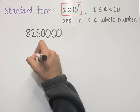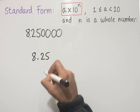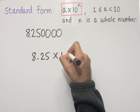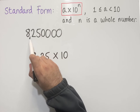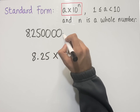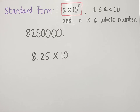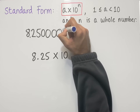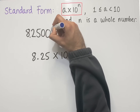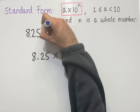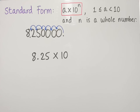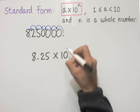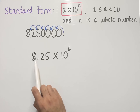We start with 8.25 and we're multiplying by a power of 10. We need to think about how many decimal places the decimal point moves to get to this position. The decimal point starts from the right and we count the spaces: 1, 2, 3, 4, 5, 6. So our power of 10 is 6, and we've written this number in standard form.